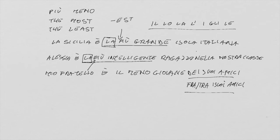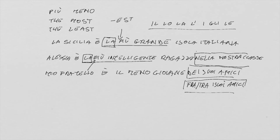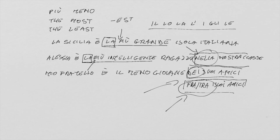You have probably noticed that when the highest or lowest degree of a quality is presented within a group — as in our examples: 'in our class,' 'of his friends,' or 'among his friends' — like in English, it can be introduced in Italian by the preposition di or the articulated preposition della, dello, and so on, or by the preposition in or the articulated preposition nella, and so on, or by the preposition tra or its equivalent fra. Grazie a tutti.